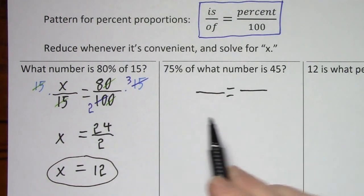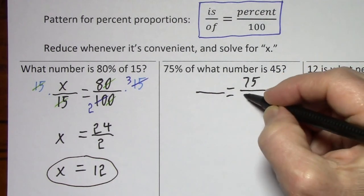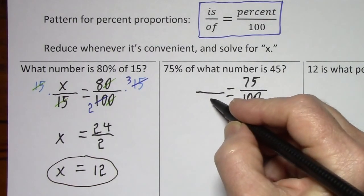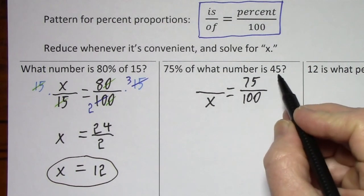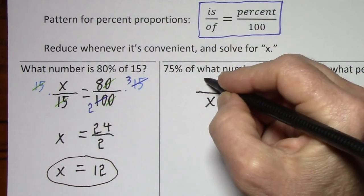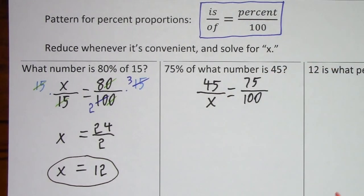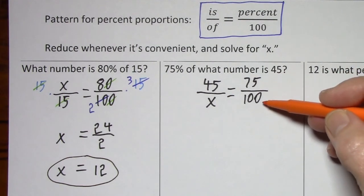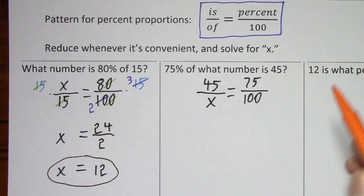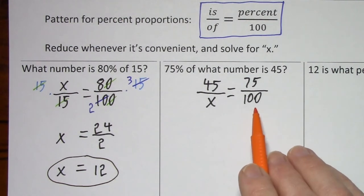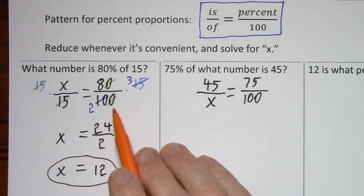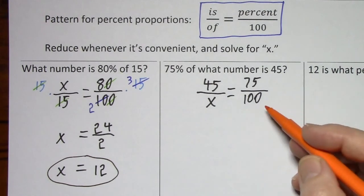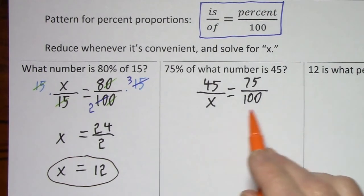75% that's 75 over 100. Of what number? Since of is in the denominator, we'll put our variable in the denominator, is 45. That goes in the numerator. Once the proportion is set up, you can reduce wherever there's a common factor. Here I could divide by 25 and divide by 25. In general, 100 is an easy number to work with, so I'm going to keep it. I did reduce it over here, but I was able to get it all the way down to a 2. So that was pretty convenient. It's really just a matter of preference.